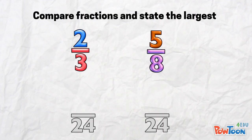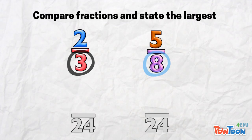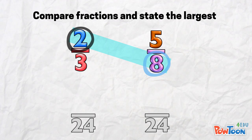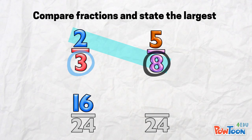I'm greying this out because what's important here is the numerators. To get 24, I multiply 3 times 8, so I have to multiply the numerator by 8. 2 times 8 is 16. And I multiply 8 by 3 to get 24, so I have to multiply 5 by 3. 5 times 3 is 15.